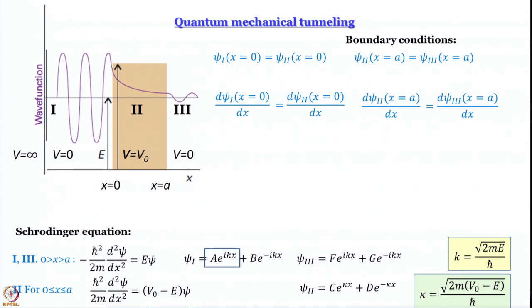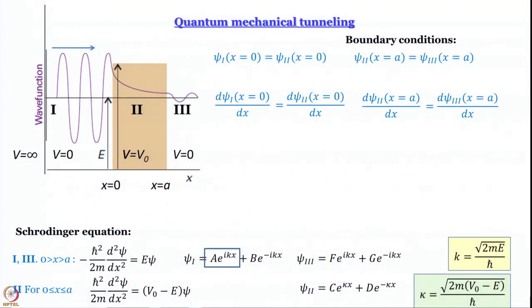In region 1, the term Ae^(ikx) is an eigenfunction of the linear momentum operator with eigenvalue +kℏ (particle moving right), and Be^(−ikx) has eigenvalue −kℏ (particle moving left). So inside region 1, the particle moves in both directions.